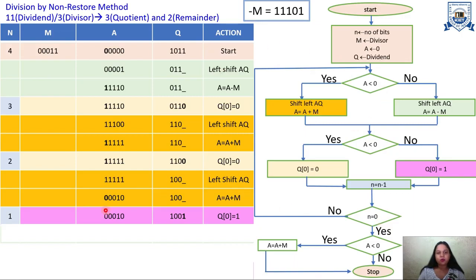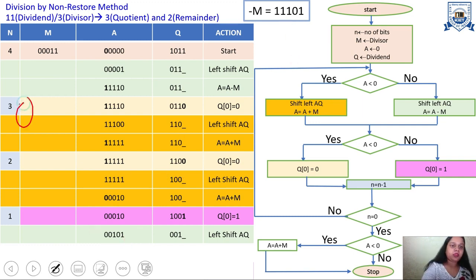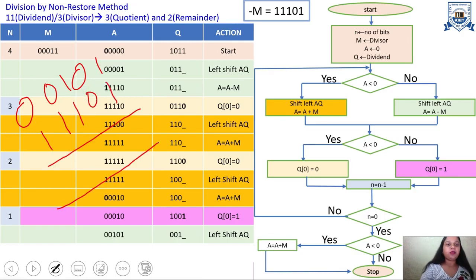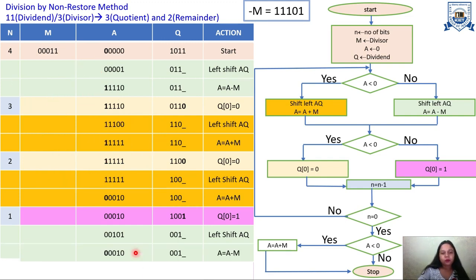A is not less than zero (MSB = 0), so we take the A ≥ 0 branch: shift left AQ, then compute A = A − M (i.e., A = A + (−M)). A is 00101 and −M is 11101. Adding: 1+1=10 (write 0 carry 1), 0+0+1=1, 1+1=10, 1+0+1=10, 1+0+1=10; the leading carry is omitted from the 5-bit register, giving the new A = 00010.